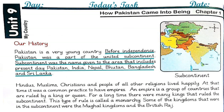For a long time, there were many kings that ruled the subcontinent. This type of rule is called monarchy. Monarchy is ruled by a single person who inherits power, like a king or a queen. Underline these lines.